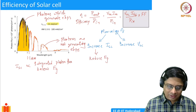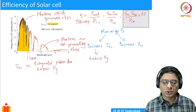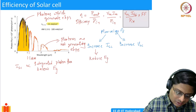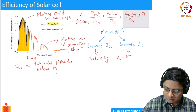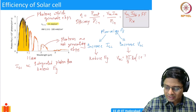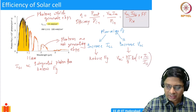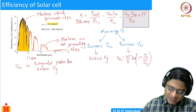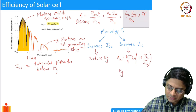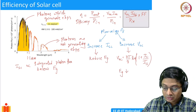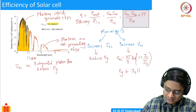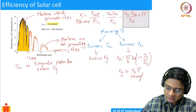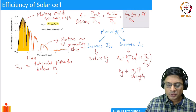However, there is a trade-off. We also have to think about what happens to the open circuit voltage. Voc equals kT/q times ln(1 + IL/IS). If you reduce the band gap Eg, the reverse saturation current IS increases dramatically, and when IS increases strongly, Voc decreases.